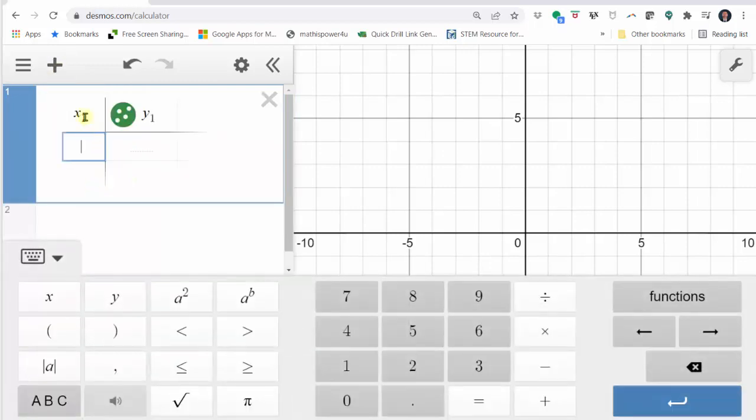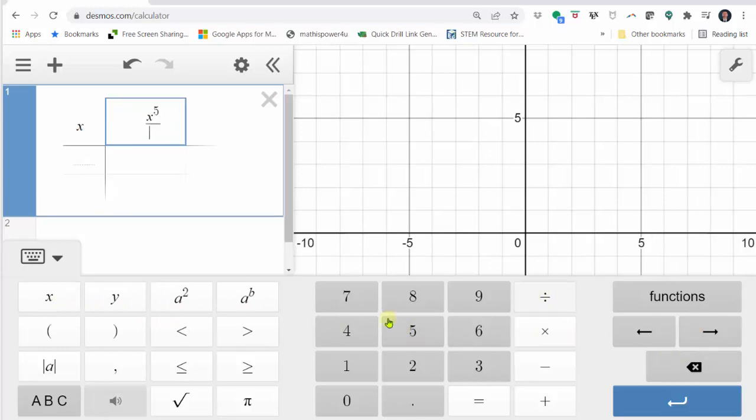By default, x1 is in column one, y1 is in column two. Let's clear x1 and just enter x. In column two, we'll clear y1 and enter our function x to the fifth, right arrow, divided by five to the power of x.